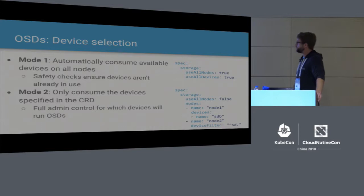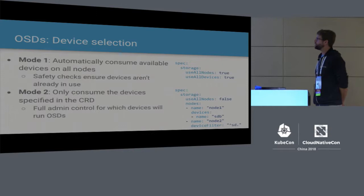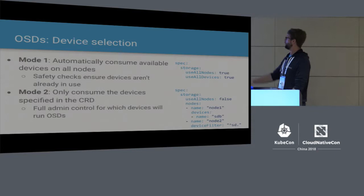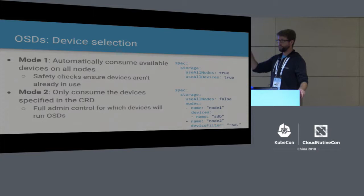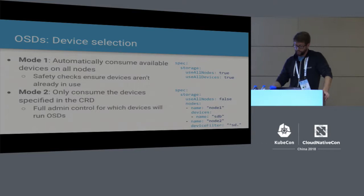There are a couple of ways to specify what devices you want to run. You can say you want to use all nodes and all devices — everything Rook and Ceph finds, just start using it. There are sanity checks to make sure we don't format a drive already in use or that has a file system or child partitions. Otherwise you can be more specific: on this node, use this device, or use a regular expression filter so every device matching the regex is included, giving more fine-grained control over which disks to include.